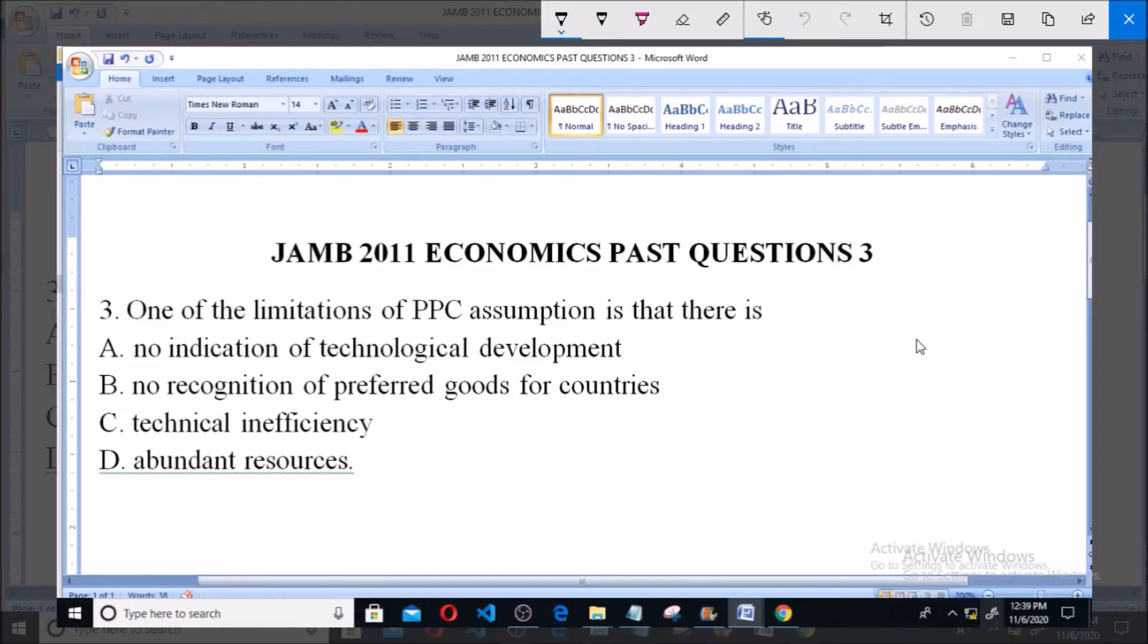JAMB 2011 past question number three says one of the limitations of PPC assumption is that there is: A) no indication of technological advancement and developments, B) no recognition of preferred goals for countries, C) technical inefficiency, and D) abundant resources.